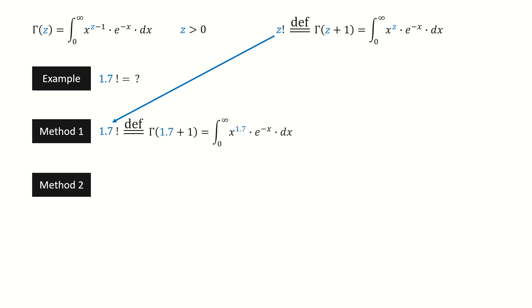For method 1, we directly use the definition and plug in z equals 1.7. After taking the numerical integration, we get this result at five decimal places.